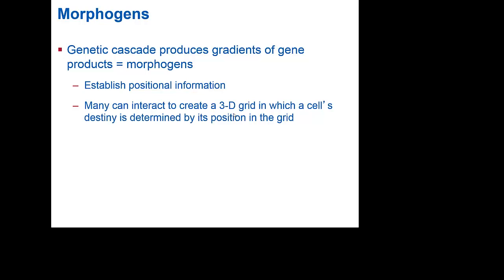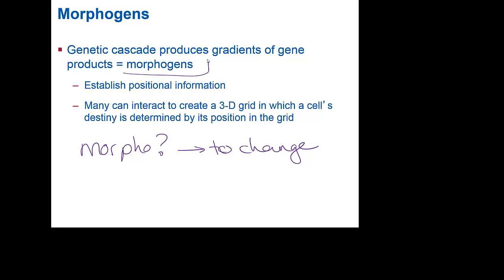One major group that we look at in this is morphogens. What does 'morpho' mean? To change. So if we're looking at something that changes, we are going to use particular chemical compounds to make those changes occur. Morphogens are a particular group of those chemicals that are going to help us make these changes.